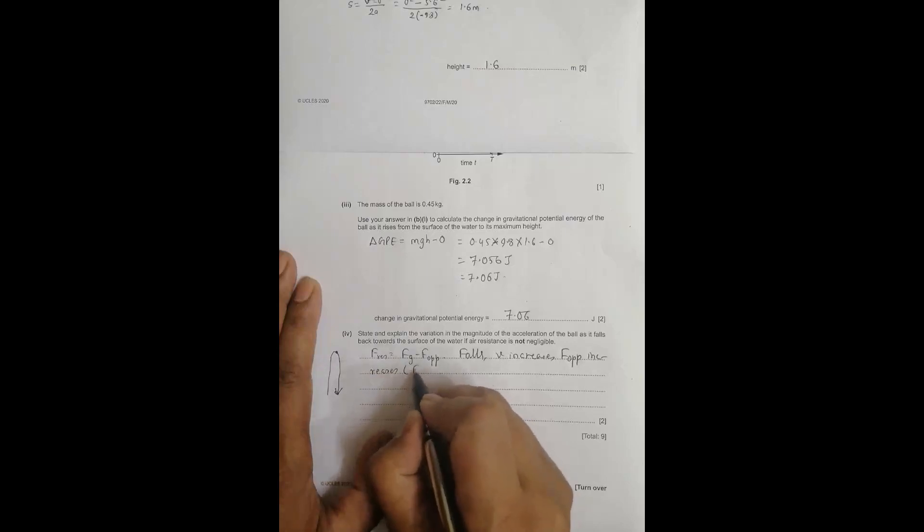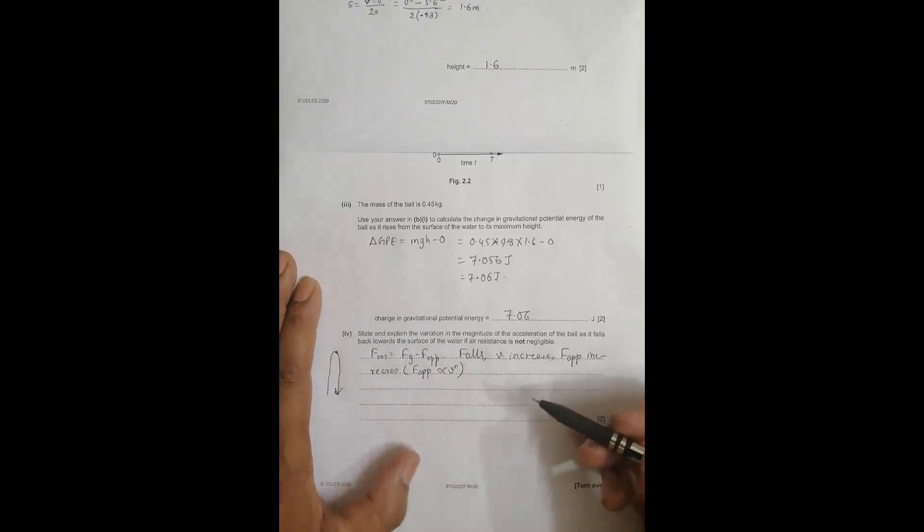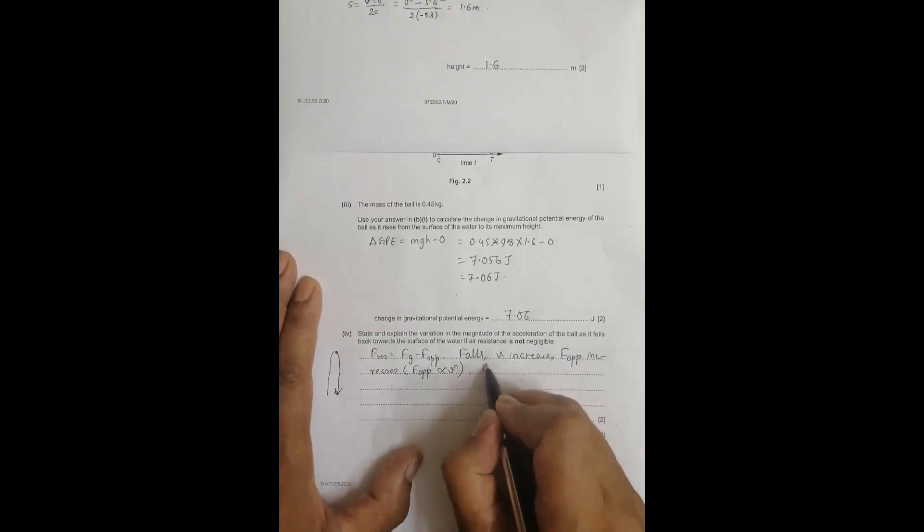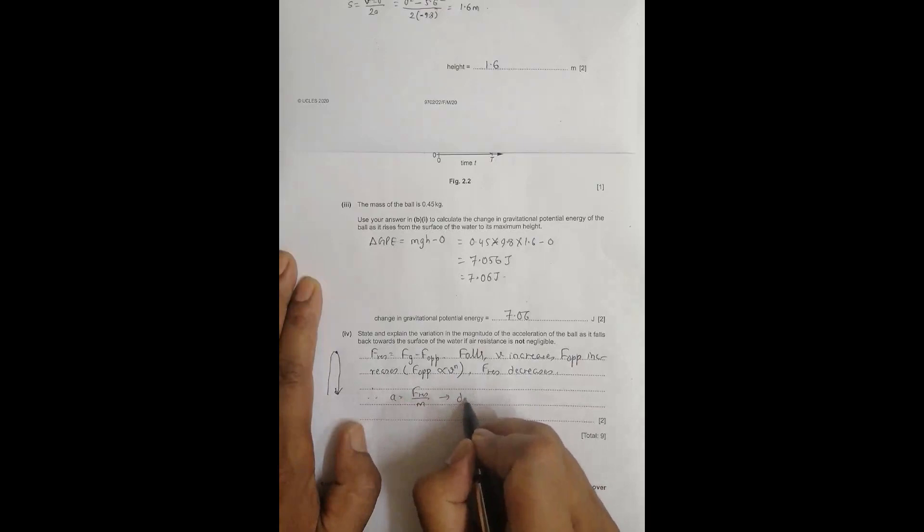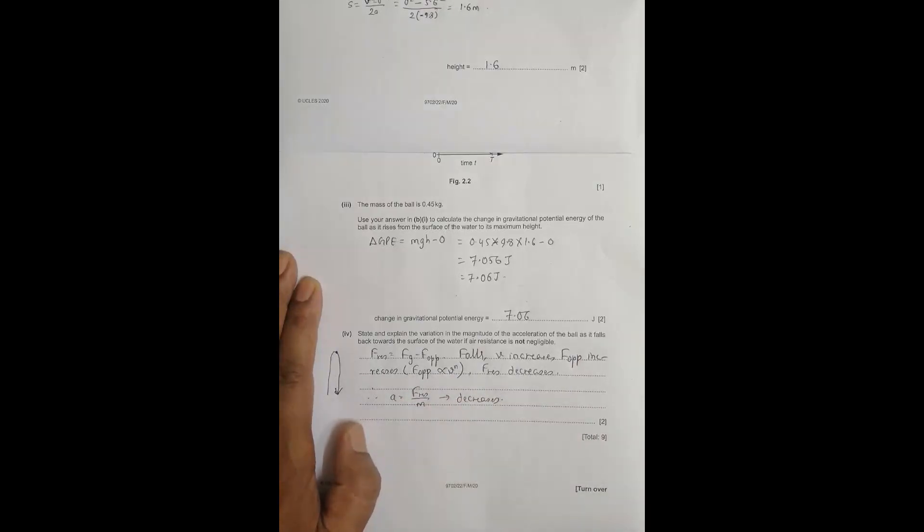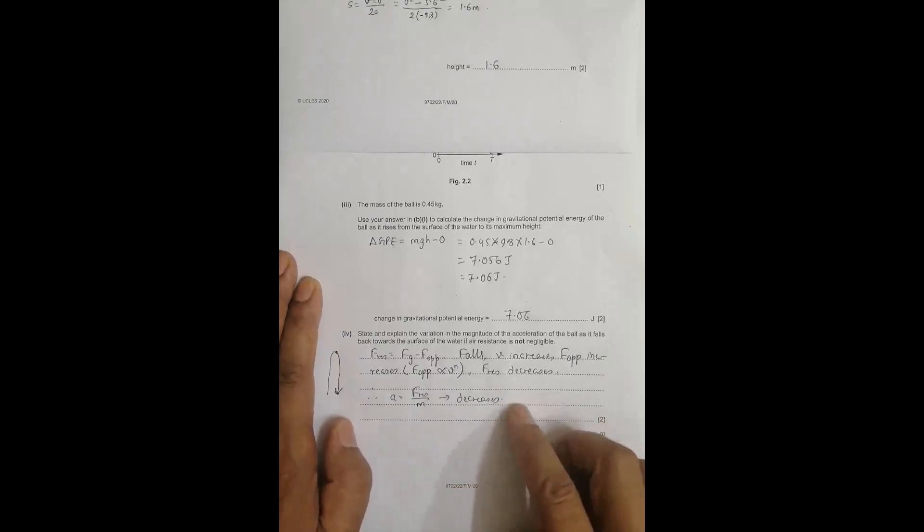This is because F opposition depends on velocity. Whether it's to the first, second, or third power, it increases with velocity. This means F resultant decreases. Therefore, since acceleration equals F resultant divided by mass, the acceleration also decreases.